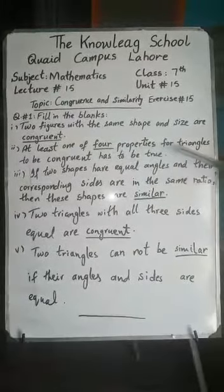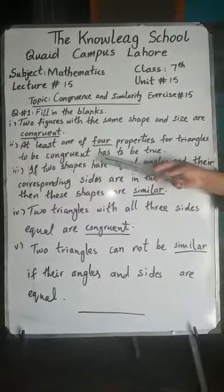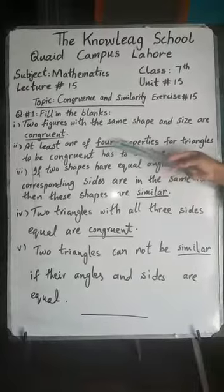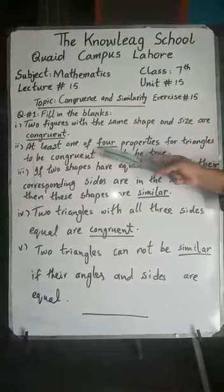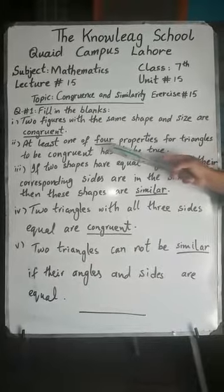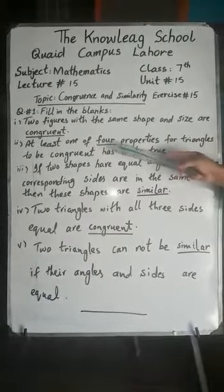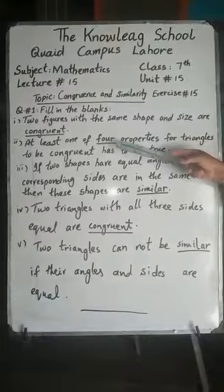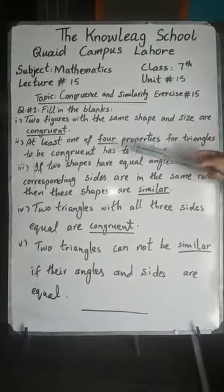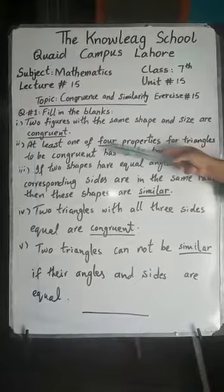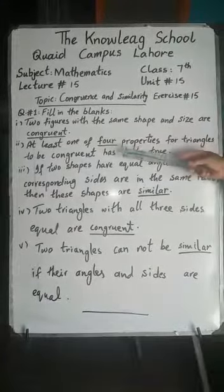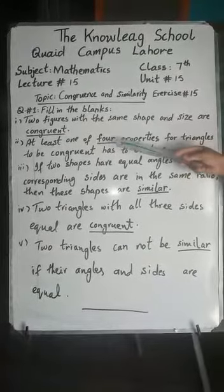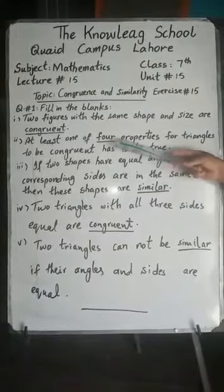Second part: at least one of the blank properties for triangles to be congruent has to be true. The answer is four properties, because according to the law of congruence there are four properties. First is Side-Side-Side (SSS); if all three sides of two triangles are congruent, then the triangles are congruent. Second is Side-Angle-Side (SAS). Third is Angle-Side-Angle (ASA). Fourth is Right angle-Hypotenuse-Side (RHS).